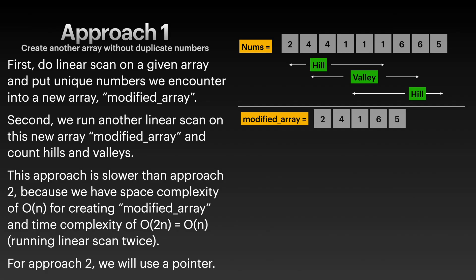I had two approaches for solving this problem. The first approach is we create another array called modified_array, and this array will not have any duplicate numbers. We run a linear scan on our given array, the nums array. Notice that here we have three hills and valleys combined - we have 2, 4, 4, 1, and these fours are the hill.